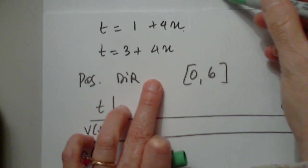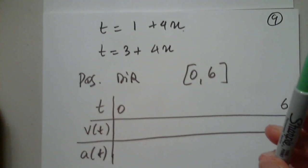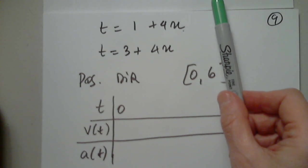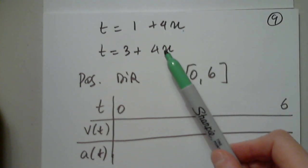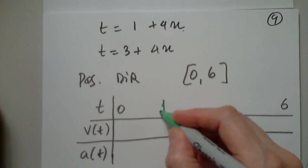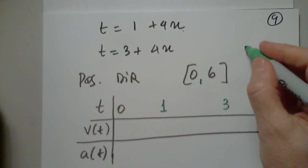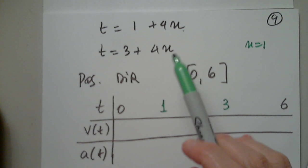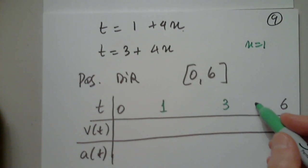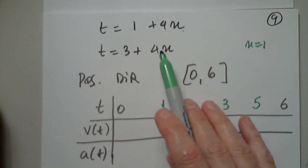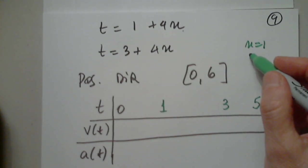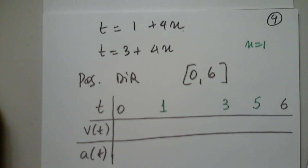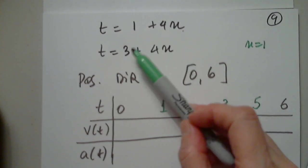n, as I mentioned, can be these. So I'll start with n equals 0. With n equals 0, I have 1 and 3. With n equals 1, 4 plus 1 is 5. 4 plus 3 is 7, out. So I have 5.